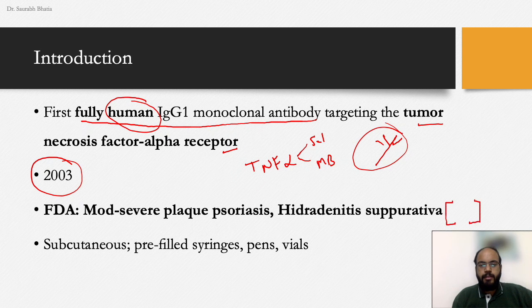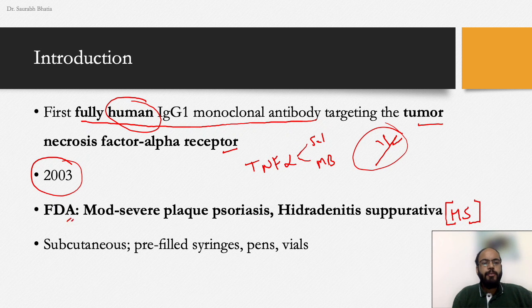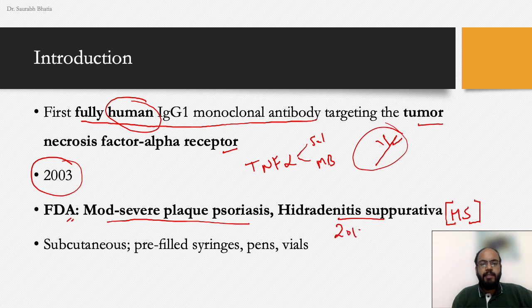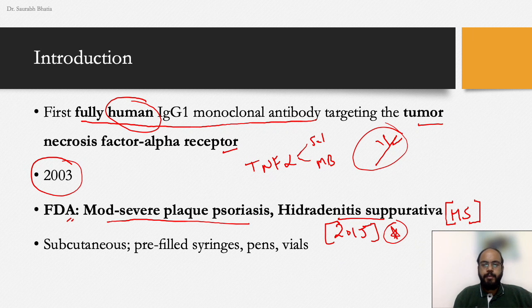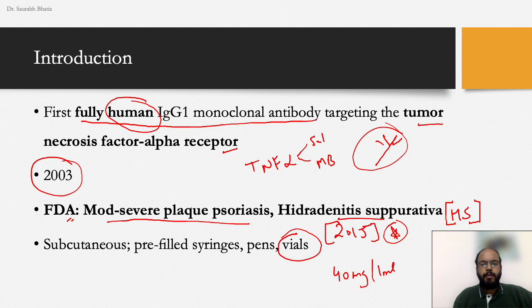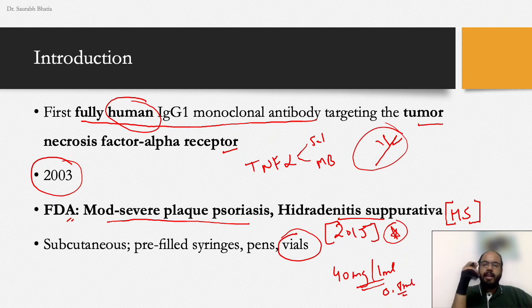I will use the short form HS for hidradenitis suppurativa. The FDA-approved dermatology indications are moderate-to-severe plaque psoriasis and HS. For HS, FDA approval was received in 2015 — this is worth noting as many older articles don't mention it. The drug comes in various forms: initially it was available as IV vials at 40 mg/mL concentration.